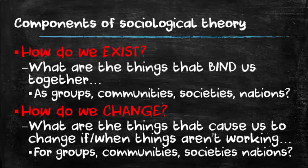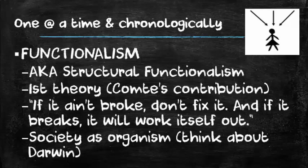We're going to talk about our theories chronologically, from the very first theory all the way through. The first theory important in the field of sociology is called functionalism — today you'll also hear it called structural functionalism. This was the first sociological theory, going all the way back to Auguste Comte and Emile Durkheim, those original French sociologists. I like to think about this theory as: if it ain't broke, don't fix it. And if it breaks, don't do anything — it'll work itself out.